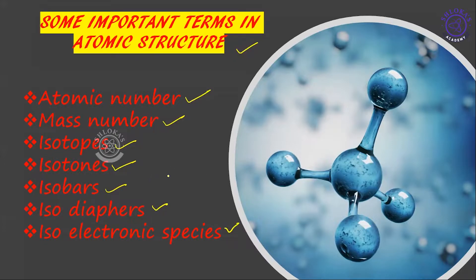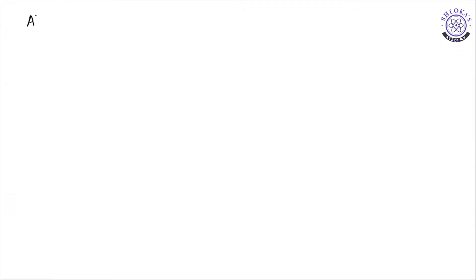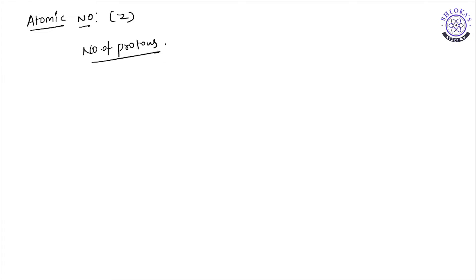For all these terms we are going to discuss definitions and examples. First, let's discuss atomic number. Atomic number is generally denoted by the symbol Z, which is equal to the number of protons present in any atom or nucleus. For example, carbon has an atomic number of six, meaning there are six protons in carbon.